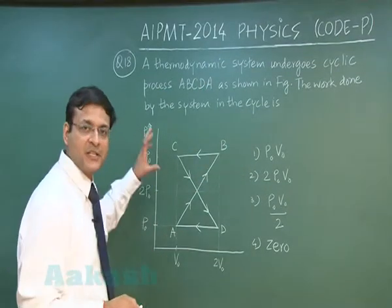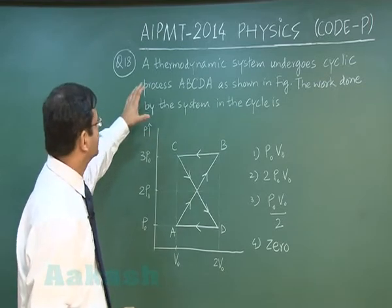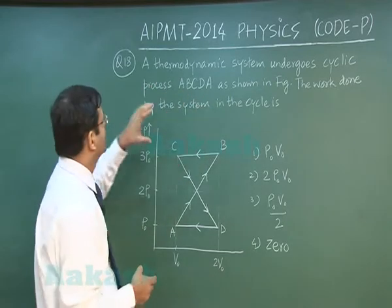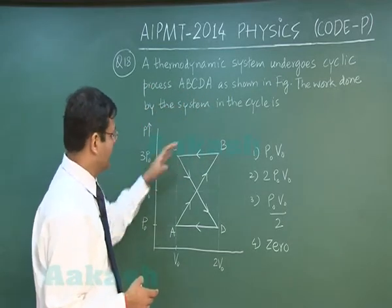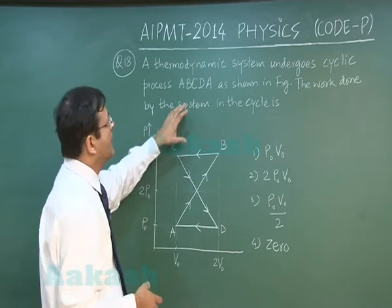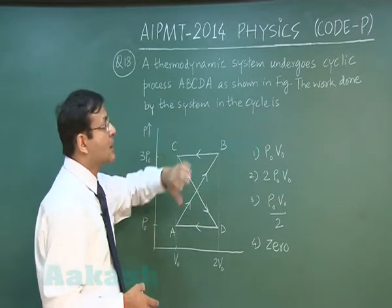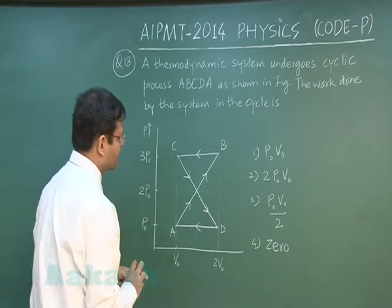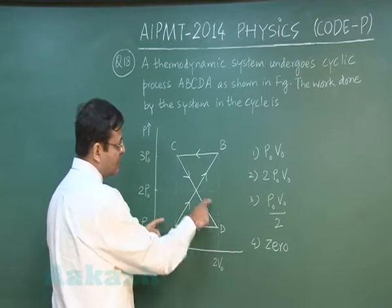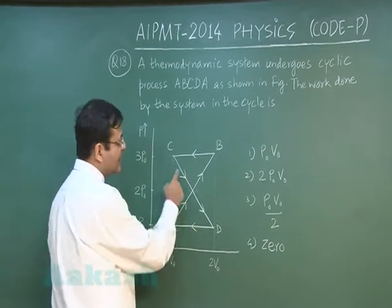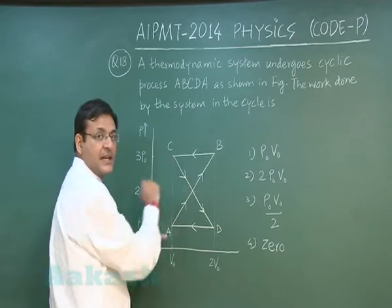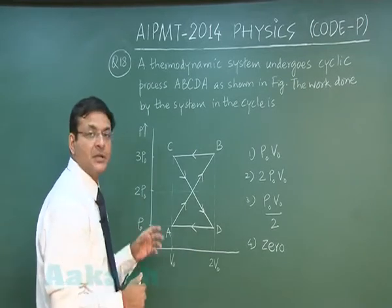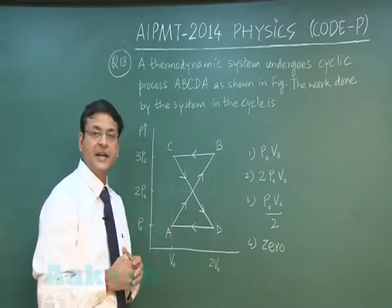In question 18, a thermodynamic system undergoes a cyclic process ABCDA as shown in the figure. The work done by the system in the cycle is to be found. In this question, there is a clockwise cyclic process and an anti-clockwise cyclic process, both with equal area in the pressure-volume diagram. The area under a P-V diagram represents work done.